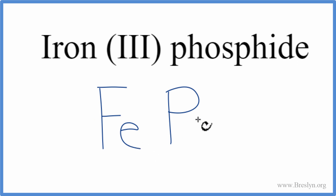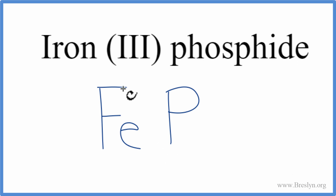So iron is a metal, and phosphorus is a non-metal. This makes it an ionic compound, and we need to take into account the charges on the iron and the phosphide in iron-3-phosphide.